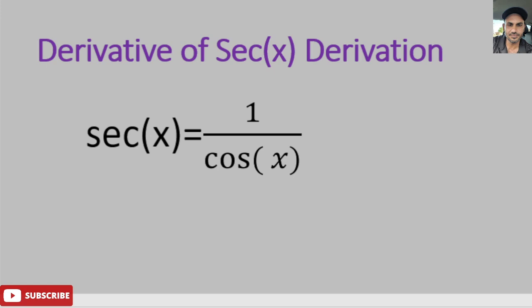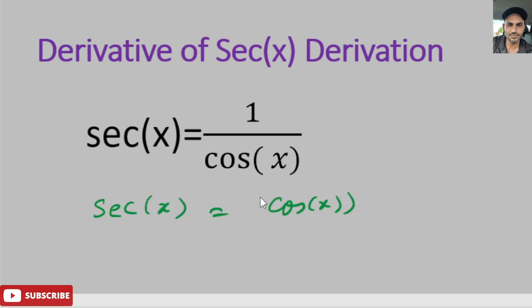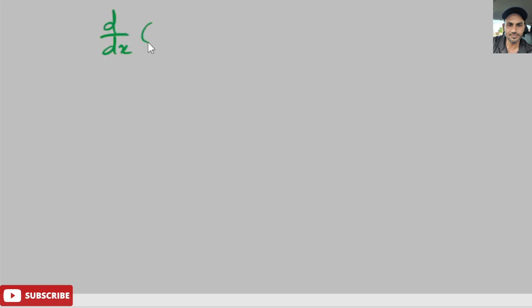Hello, welcome everyone. In this video I'm going to take the derivative of secant of x. Secant of x is defined as 1 over cosine of x, or the inverse of cosine of x. We're going to use the derivative of cosine of x to find the derivative of secant of x. We can write secant of x as cosine of x to the negative 1.